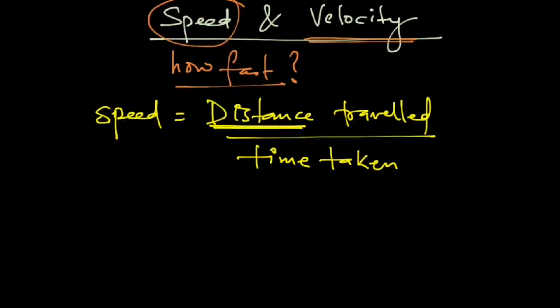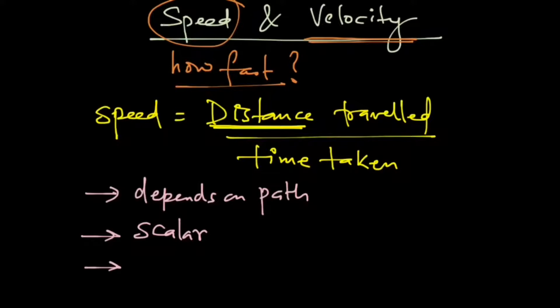As distance is dependent on the path, speed is also dependent on the path. It takes all other properties of distance as well - that is, it is a scalar quantity without a direction. It is also always greater than or equal to zero. Zero is the case when the particle will be at rest.